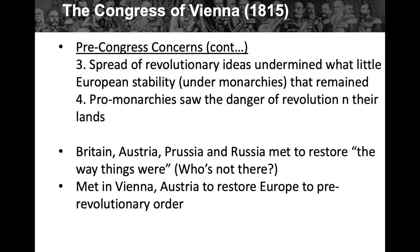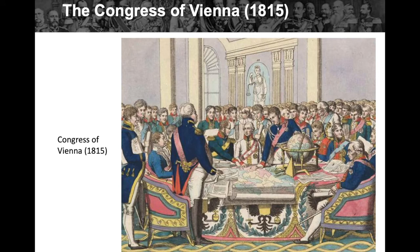At the Congress, Britain, Austria, Prussia, and Russia met to restore the way things were. Notably, France is not there — telling of France's continued turmoil. They met in Vienna, Austria, to restore Europe to pre-revolutionary order. There's a picture of the Congress of Vienna — somewhat cartoony — showing rulers around a map. Whenever you get rulers from different countries around a map, they're going to make decisions about who's where, which may divide and cause other problems.